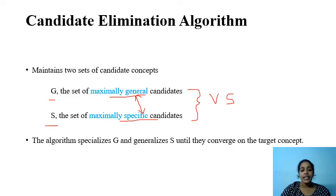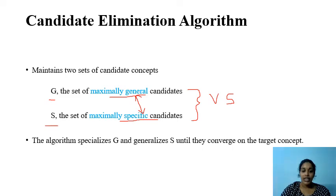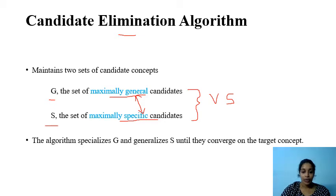In the previously discussed algorithms — general-to-specific and specific-to-general — only one consistent hypothesis is found to describe the concept. Here, the Candidate Elimination Algorithm finds all consistent hypotheses, including the maximum general, maximum specific, and in-between hypotheses.